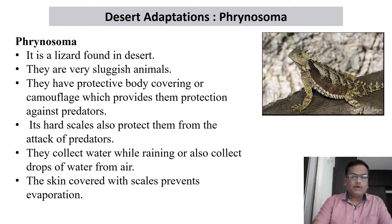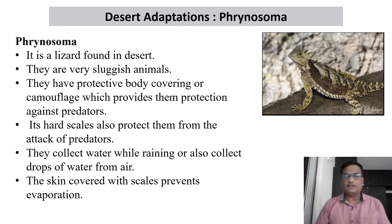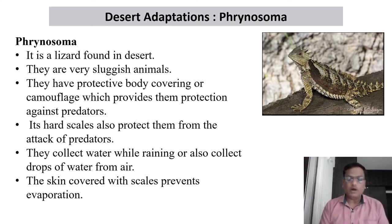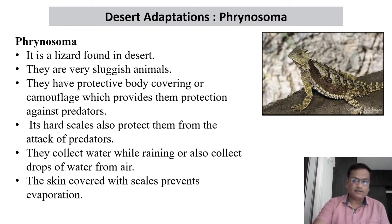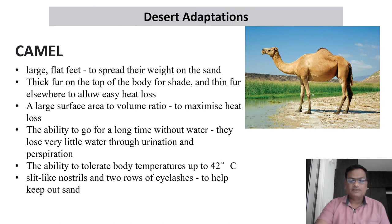The skin covered with scales also prevents evaporation. The water present inside the body must be preserved because the climate is very hot and the body tends to lose water by evaporation. This is achieved by a very thick skin covered with scales. Those are the desert adaptations found in the reptile Phrynosoma.